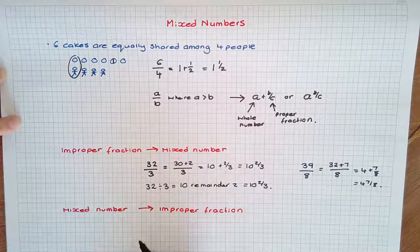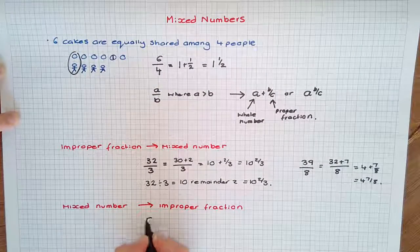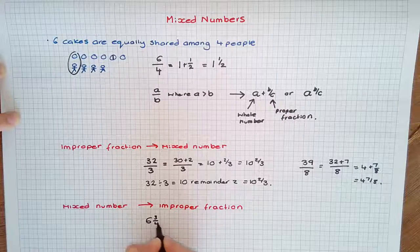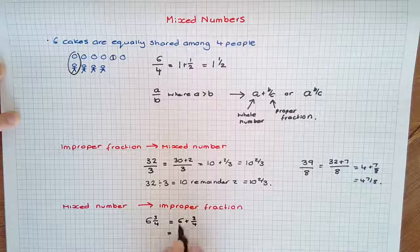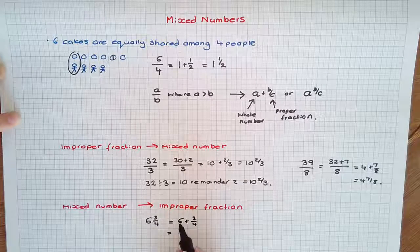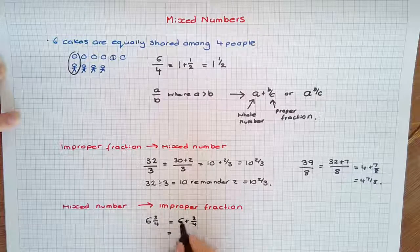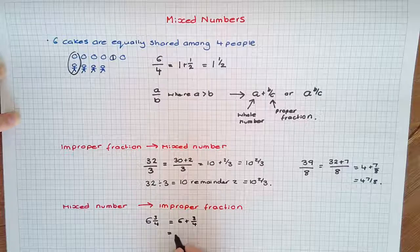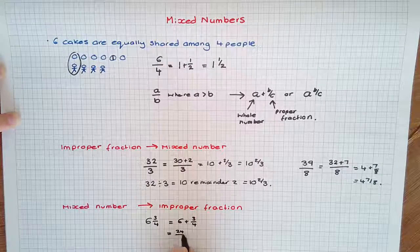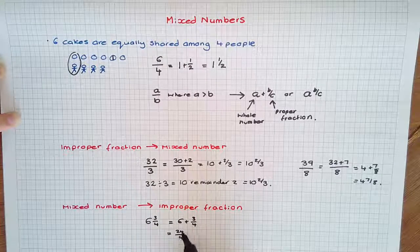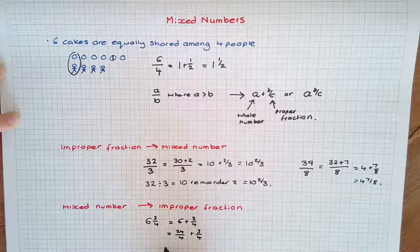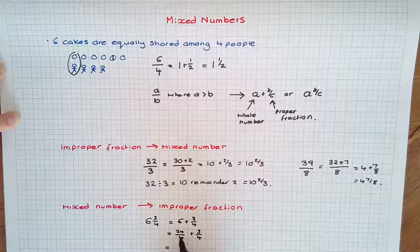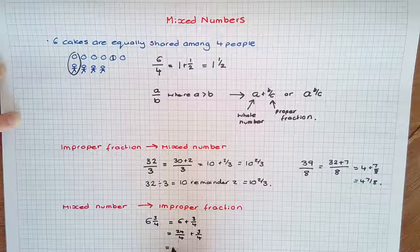Converting mixed numbers to improper fractions, we just work backwards. For instance, 6¾: we have 6 plus ¾. Now 6 can be expressed as an equivalent fraction over a denominator of 4 as 24/4, because 24 divided by 4 is 6. Plus our ¾, we finally have 24/4 plus ¾, which gives us 27/4.